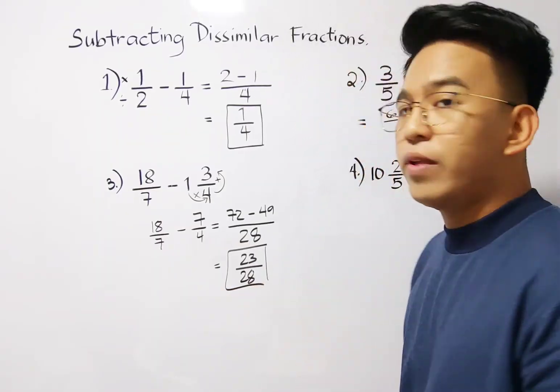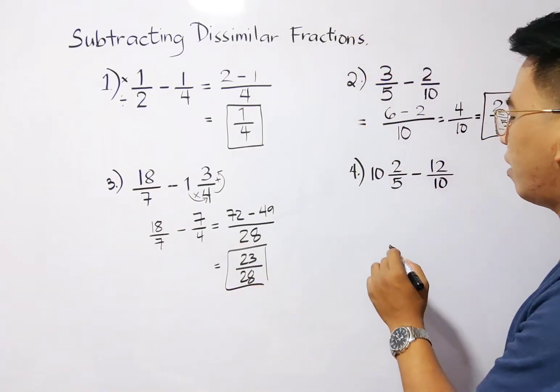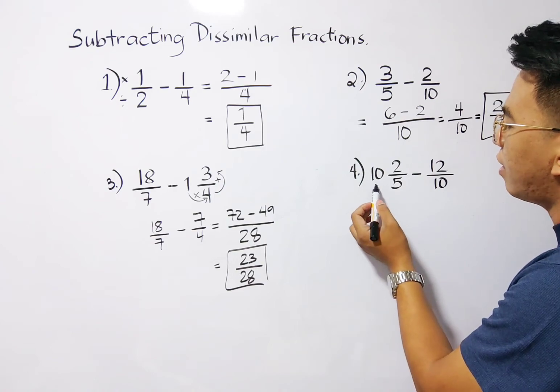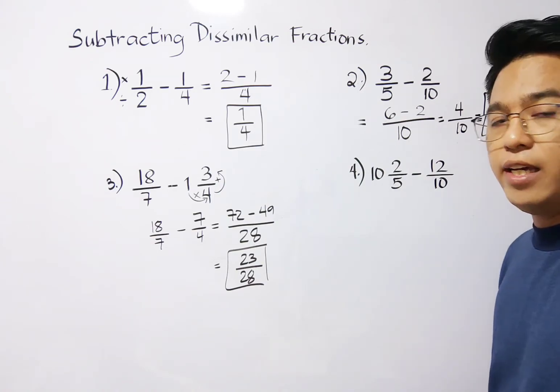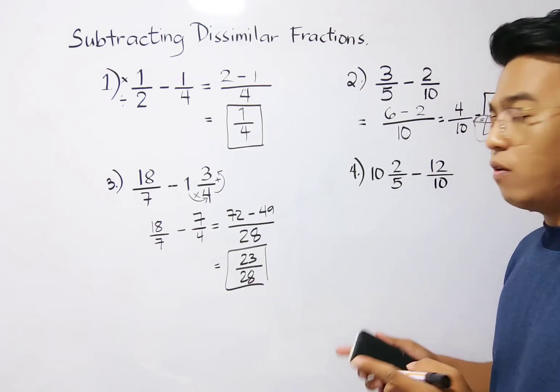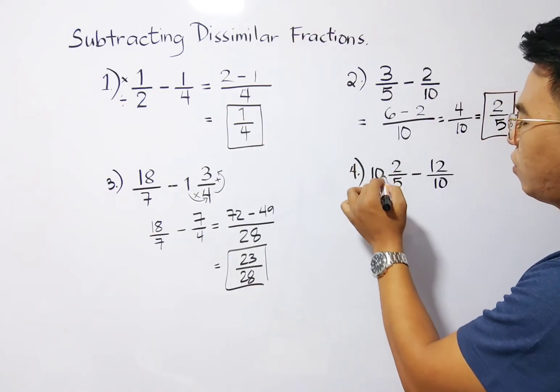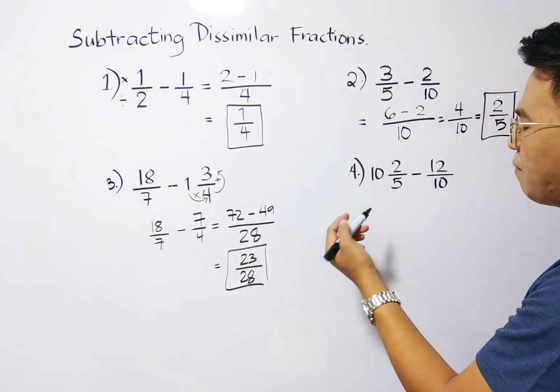Next, let's move on with the last item. We have number 4. In number 4, we are given 10 and 2 over 5. So for 10 and 2 over 5, we need to convert this into an improper fraction.